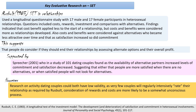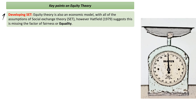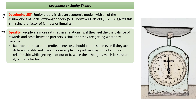Moving on to equity theory — as suggested at the start, equity theory is a development of social exchange theory with all the same initial assumptions. However, Hatfield criticized social exchange theory for missing the key component of fairness or equality. Equity theory proposes that people are more happy if the balance of rewards and costs between partners is similar — that one partner isn't getting far more out of the relationship than the other. The concept is balance: both partners' profit minus loss should be roughly equal, even if the individual profits and losses differ.